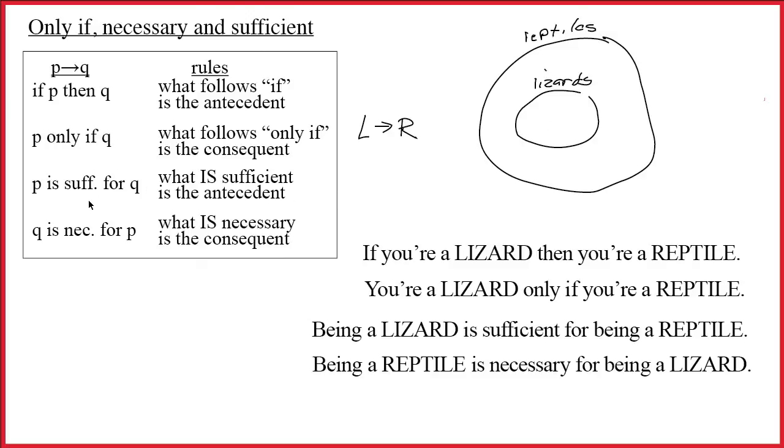In fact, notice the reason I say that sufficient and necessary are two sides of the same coin, and that sufficient and necessary always go together, is that they're just two different ways of talking about the same picture. Being in the inner set is sufficient to put you in the outer set. But being in the outer set is necessary for being in the inner set.